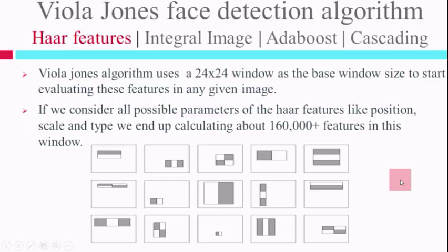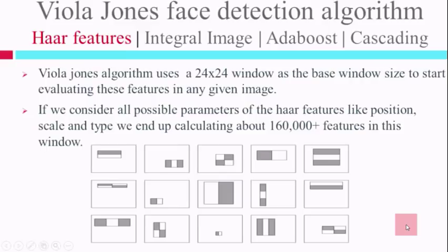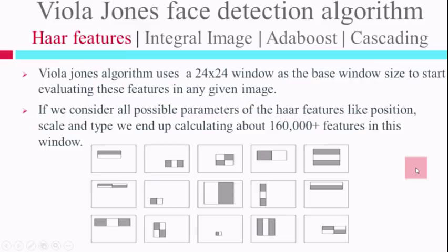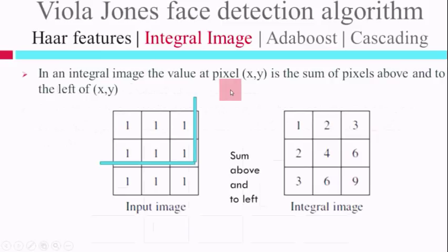This is a problem: we need to evaluate a huge set of features — about 160,000 — for every 24x24 sub-window in any new image, which is practically very difficult or nearly impossible for real-time face detection. The basic idea is to eliminate redundant features — those which are not useful — and select only those features which are very useful. This is done by AdaBoost, which eliminates all the redundant features and narrows it down to several thousands of features that are very useful. Before going further into AdaBoost, let us introduce the concept of integral image.